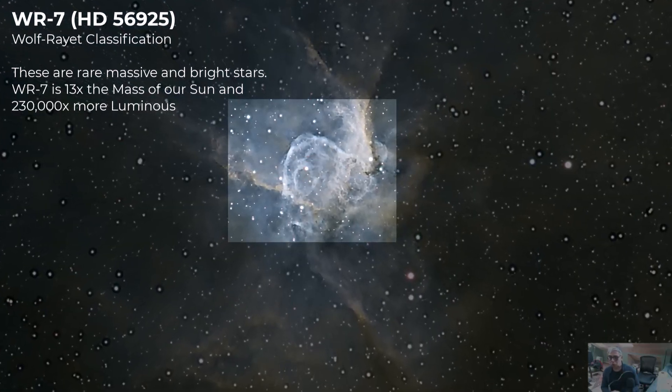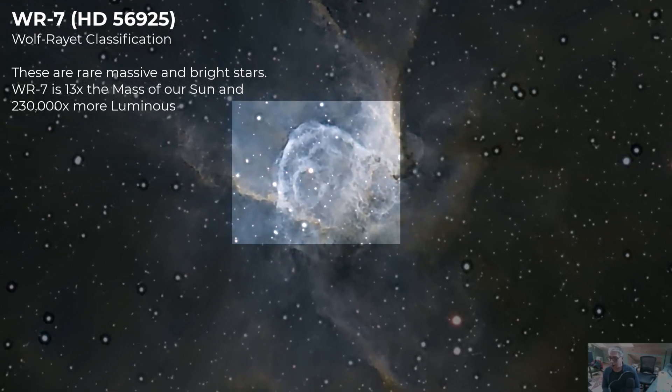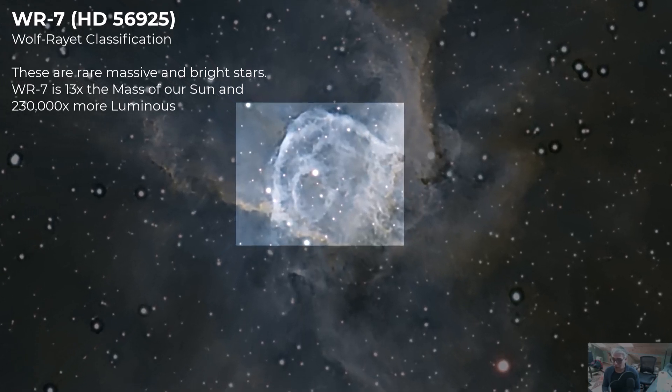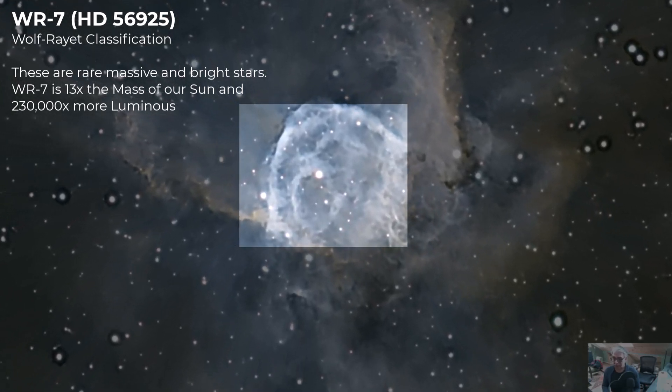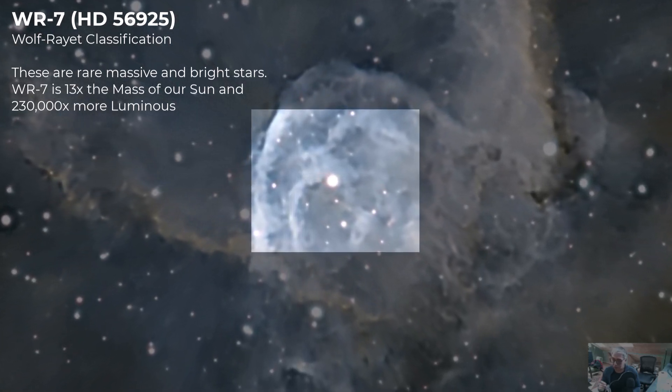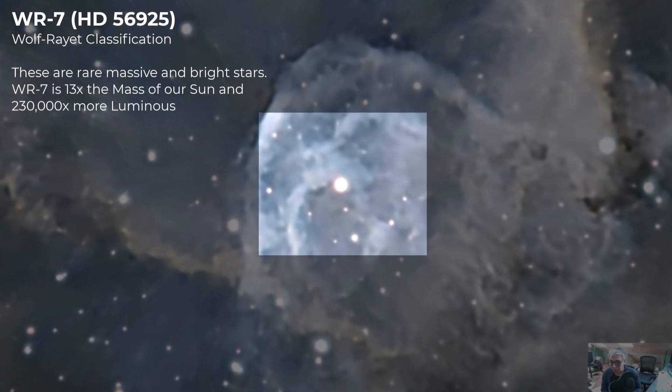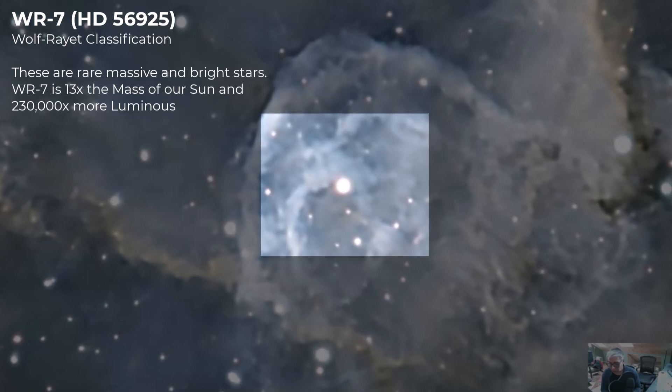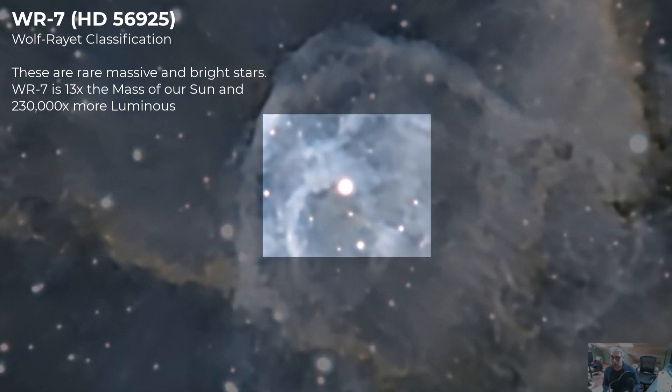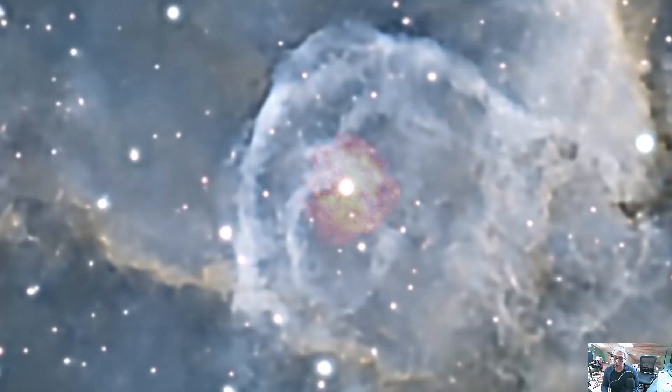A Wolf-Rayet star is a really big, really hot, really bright star. They're much more massive than the sun, and they shine thousands to perhaps millions of times brighter. WR7 is 13 times the mass of our sun and 230,000 times brighter than our sun. That's actually small for a Wolf-Rayet star, but it's still massive compared to our own.